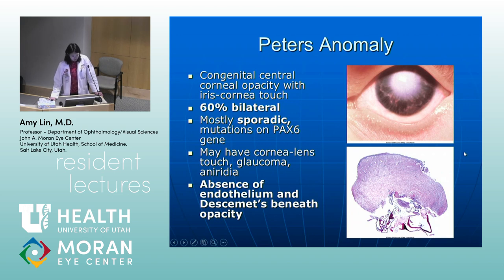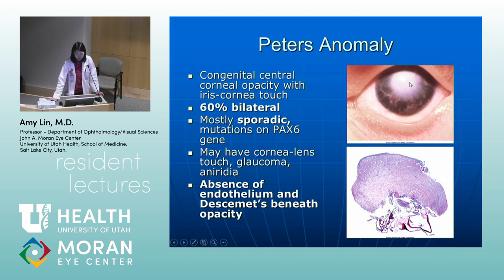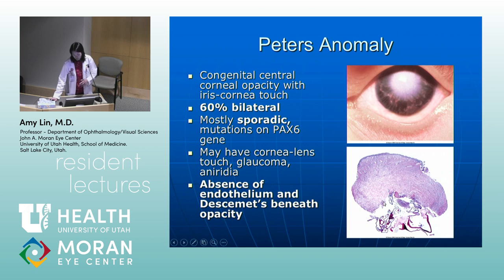Peter's anomaly is a congenital central corneal opacity with iris-cornea touch. It is bilateral 60% of the time. It is mostly sporadic due to mutations on the PAX6 gene. There may be cornea-lens touch underneath the corneal opacity, and it's highly associated with glaucoma and also aniridia. On the pathological specimen, you see very thickened cornea where the lens was touching the cornea, and there's no endothelium or Descemet's membrane beneath the corneal opacity.